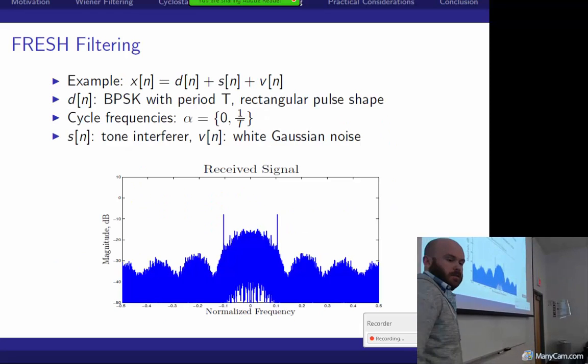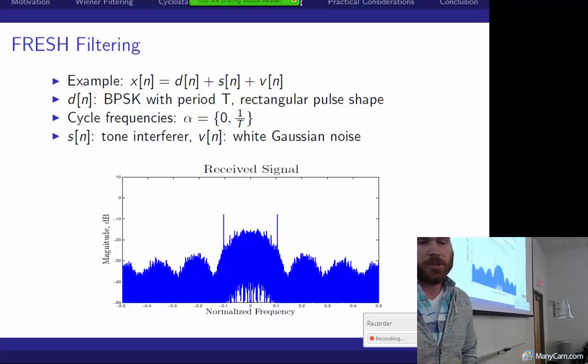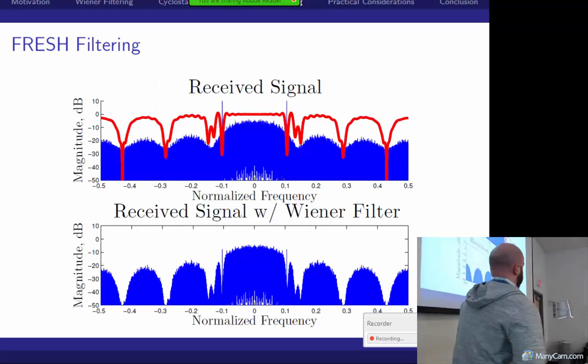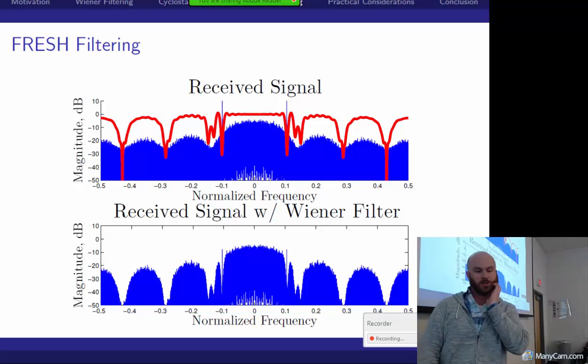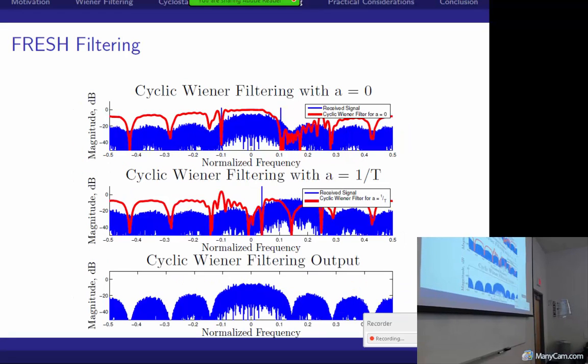So let's look at an example. So I receive BPSK with some tones and I have white noise on top of that. So I'm using two cycle frequencies, zero and one over T, and I apply the Wiener filter first. So like I said prior, to get rid of these tones, the Wiener filter can't do a whole lot other than try and drive them down to the noise floor. So I still get some distortion, although I mitigate those effects, I still get some distortion of the underlying desired signal. But what can I do with a fresh filter or a cyclic Wiener filter? How does this operate? So on the top here, you notch the tone out. You look at this one based on 0.1. So I notch the tone out with my first filter.